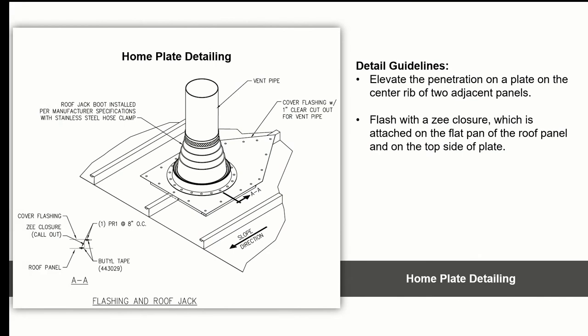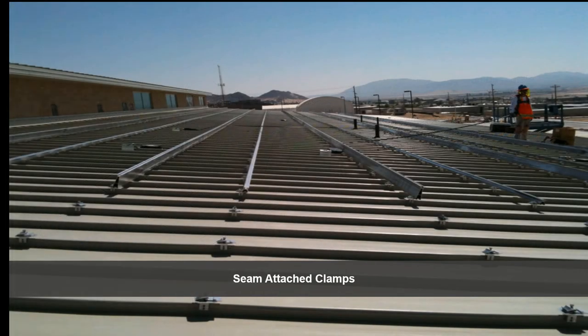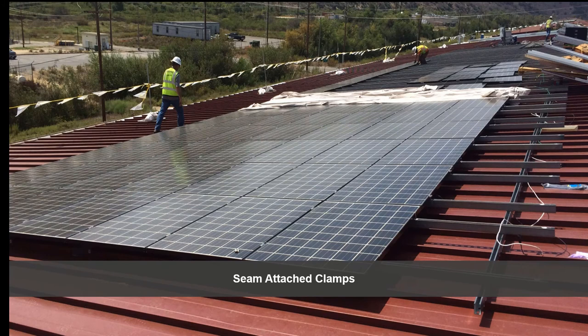When a penetration is too large to fit within the confines of one panel width or is located directly on a rib, the correct detail is to elevate the penetration on a plate placed on the center rib of two adjacent panels, and flash with a Z-closure attached on the flat pan of the roof panel and on the top side to the plate. This way the panel rib is continuous and the penetration is correctly isolated. Photovoltaic panels frequently require countless pipe penetrations to support them; however, by using seam clamps attached to the panel ribs, no roofing penetrations are required. The PV sub-framing is mounted to the clamps and finished with the PV system.